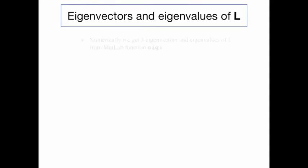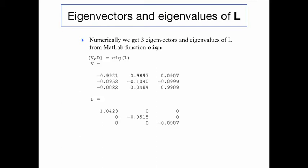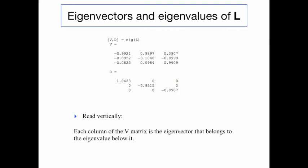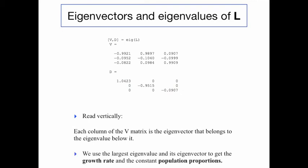Now we look at the eigenvectors and eigenvalues numerically. There are three eigenvectors for a three-by-three matrix and three eigenvalues. We get them using the function EIG in MATLAB, and you can see the screen output here. The way to read it is vertically: each column of the matrix on top is the eigenvector that belongs to the eigenvalue just below it. We are going to look at the eigenvector corresponding to the largest eigenvalue, framed in red, because we can use it to get the growth rate of the model and the constant population proportions at steady state.